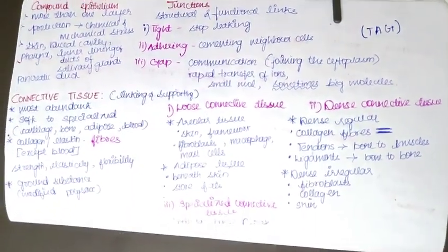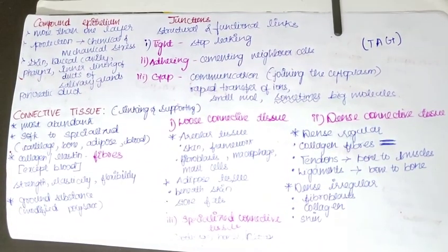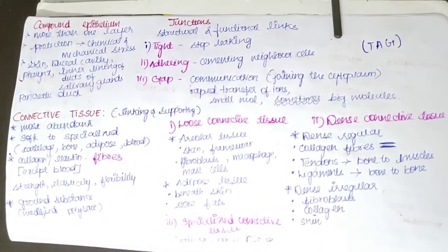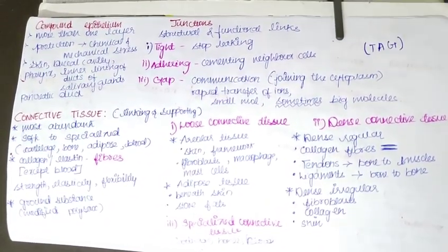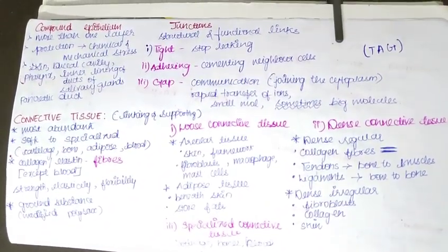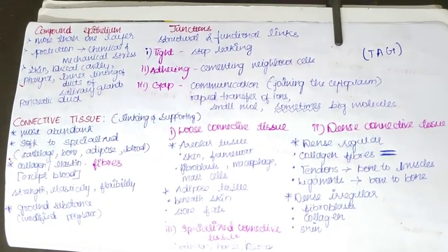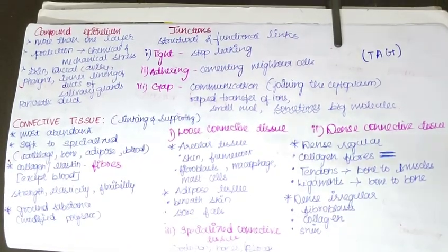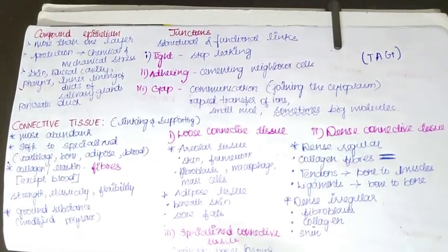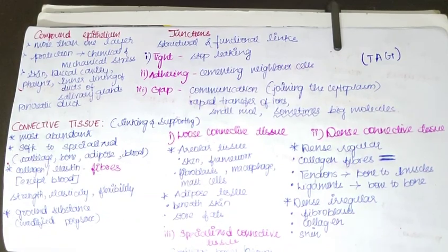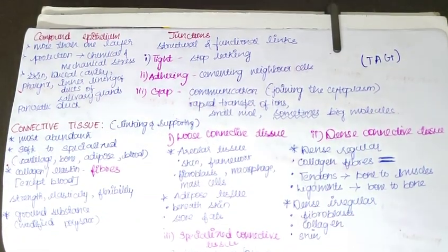The third type is specialized connective tissue, which includes three types: cartilage, bones, and blood. We will be talking about each of these in detail in the next video. Thank you.